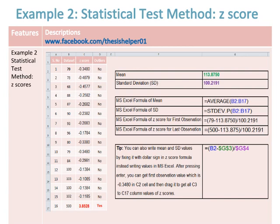The MS Excel formula for the Z-score of the first observation subtracts 113.8750 from 79 and divides by 100.2191, giving a Z-score of minus 0.3480. You can find Z-scores for the remaining 15 observations similarly. As a tip, you can fix the mean and SD values using the dollar sign in the Z-score formula instead of retyping values. After pressing Enter, you get the first observation's Z-score of minus 0.3480 in cell C2, then drag down to fill C3 to C17. The last observation, 500, is an outlier because its Z-score is 3.8528, which is greater than 3.